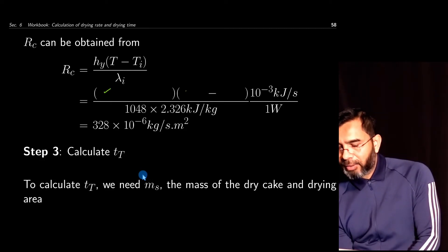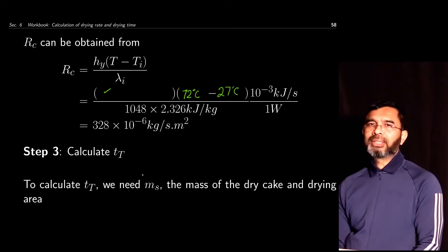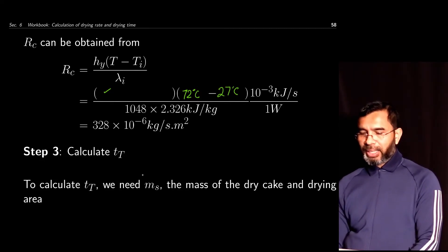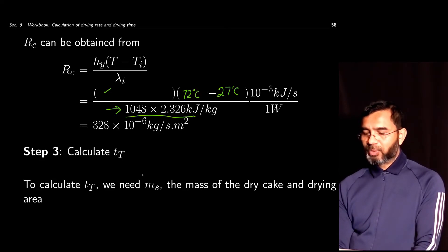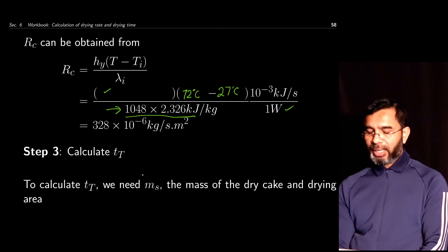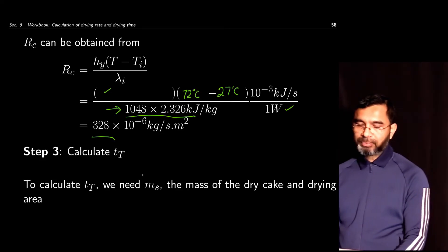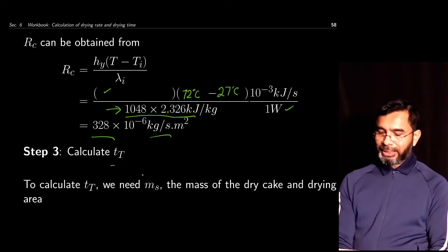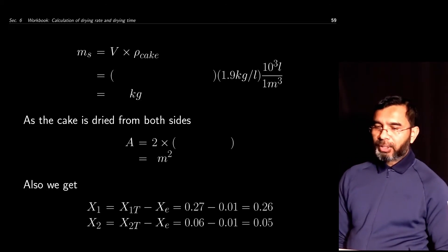Plugging in hy = 17.77 W/(m²·°C), T = 72°C (dry bulb temperature of air), and Ti = 27°C (wet bulb temperature, i.e., the temperature at the interface), along with the latent heat of water at 27°C in J/kg, and converting watts to kJ/s, gives Rc = 328 × 10⁻⁶ kg/(s·m²).